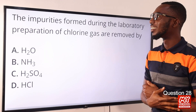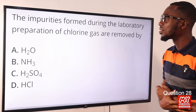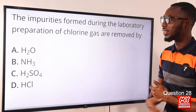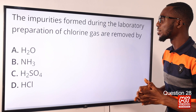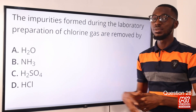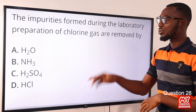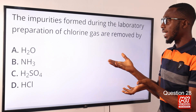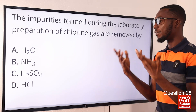Question 28. The impurities formed during the laboratory preparation of chlorine gas are removed by water. We are talking about oxidation of concentrated HCl using KMnO4. So immediately you introduce some drops of concentrated HCl, chlorine gas and HCl gases will be involved.